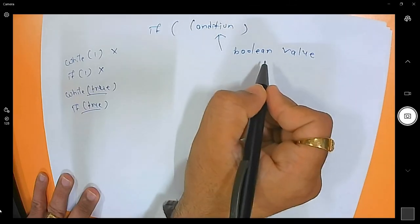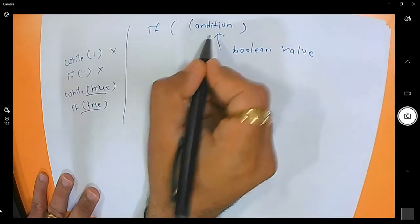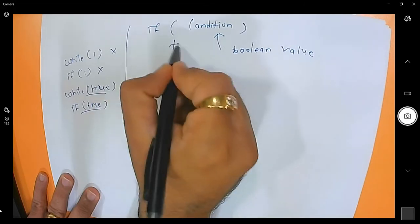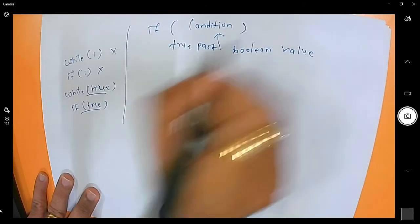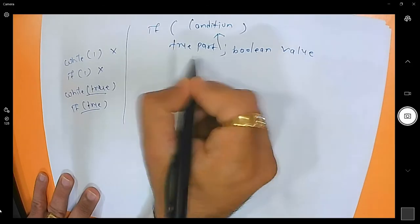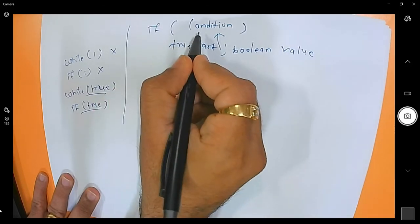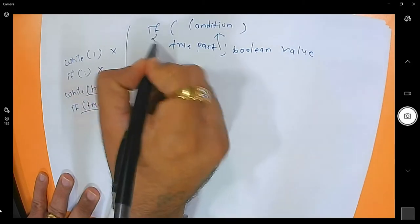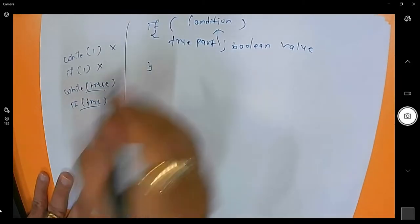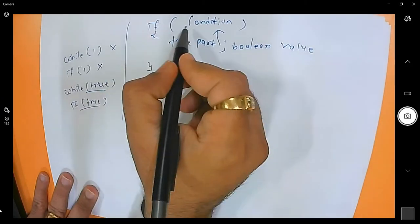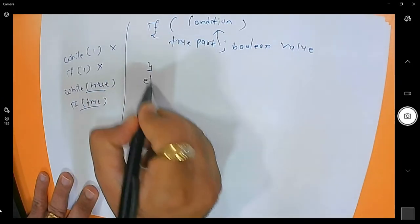You can also use a relational operator, which always returns a boolean value. If the condition is true then the true part executes. If you are not writing curly braces, by default only one statement will be executed. If your if condition has more than one statement then you can write curly braces.